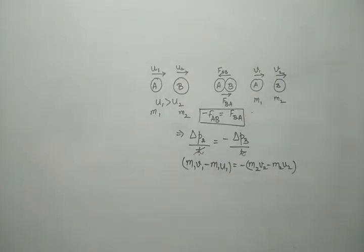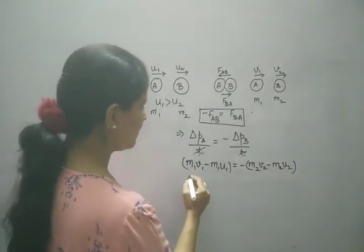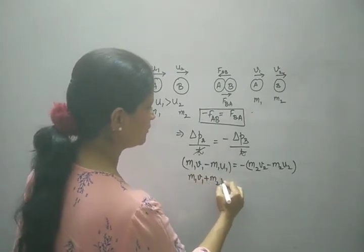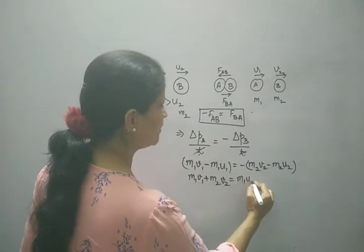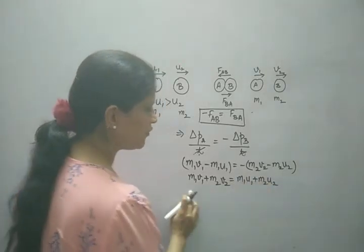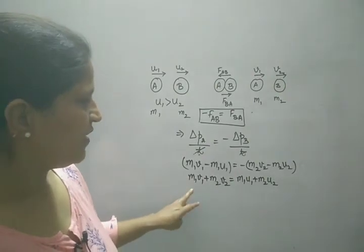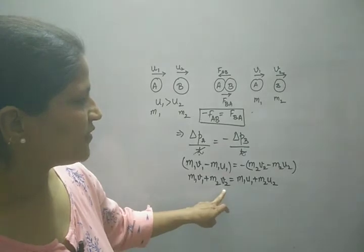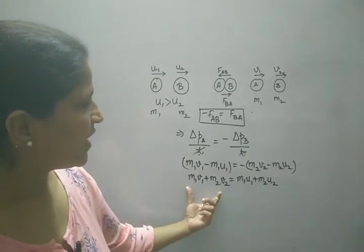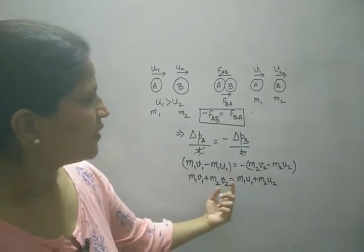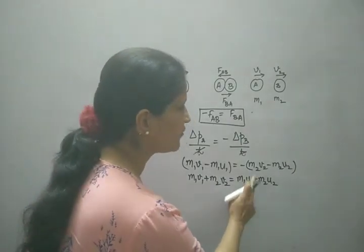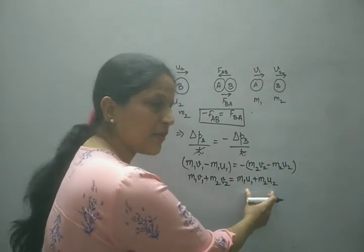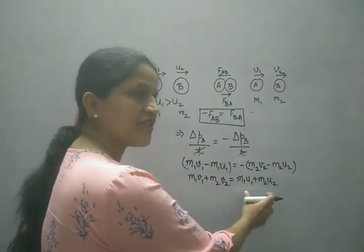When we rearrange these terms we get M1V1 + M2V2 = M1U1 + M2U2. If you notice the left hand side, this is mass times final velocity of the first ball plus mass times final velocity of the second ball, giving us total final momentum. The right side is total initial momentum. Total final momentum equals total initial momentum.